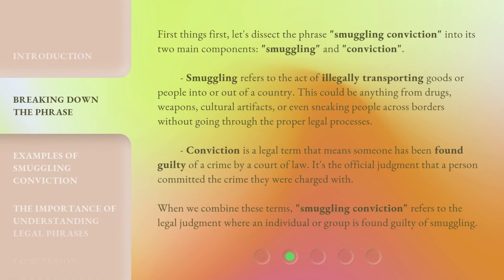First things first, let's dissect the phrase smuggling conviction into its two main components: smuggling and conviction. Smuggling refers to the act of illegally transporting goods or people into or out of a country. This could be anything from drugs, weapons, cultural artifacts, or even sneaking people across borders without going through the proper legal processes. Conviction is a legal term that means someone has been found guilty of a crime by a court of law — it's the official judgment that a person committed the crime they were charged with. When we combine these terms, smuggling conviction refers to the legal judgment where an individual or group is found guilty of smuggling.